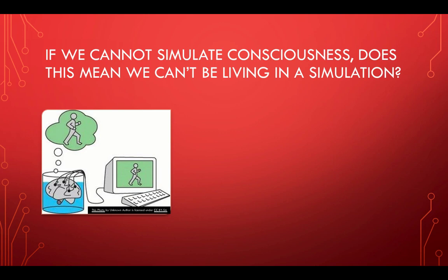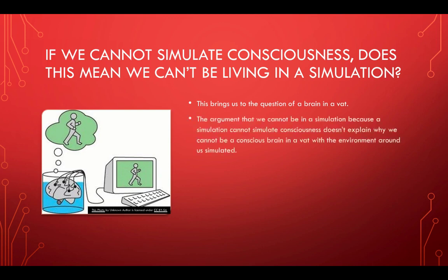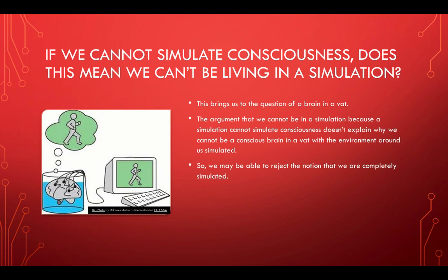You could also say that it doesn't really disprove anything about at least some part of our world being simulated. If we assume the computational theory of mind is false and has been debunked, so we can't simulate consciousness — does that mean we still can't be living in a simulation? This brings us to the brain-in-a-vat argument. The argument that we cannot simulate consciousness doesn't explain why we cannot be a conscious brain in a vat with the environment around us being simulated. So we may be able to reject the notion that we are completely simulated, but we can't reject the idea that our conscious physical brain is in a vat and something is simulating the rest of the world.